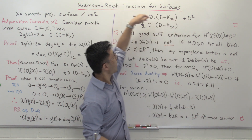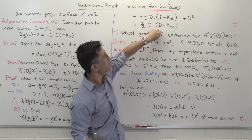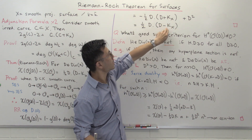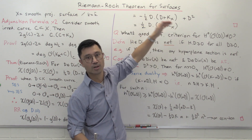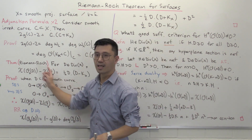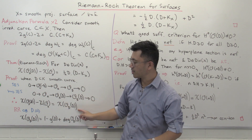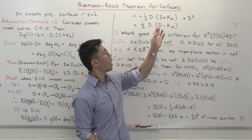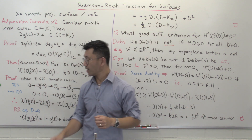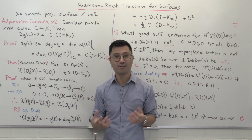Putting it together: we have a D² term from the degree, and minus one-half D² from the genus term, giving plus one-half D². There's also a minus one-half D·K_X term. This simplifies to one-half D·(D minus K_X), which is what we wanted. And that's the Riemann-Roch theorem for surfaces.